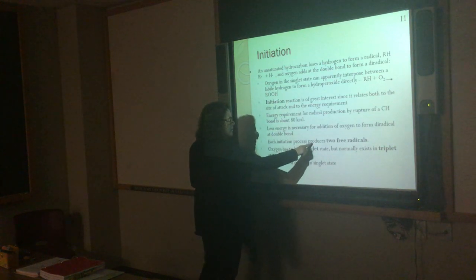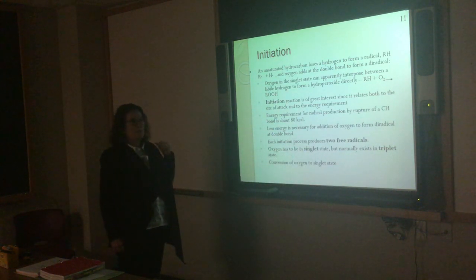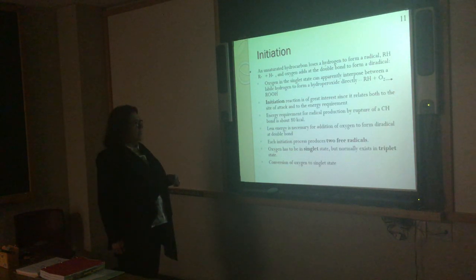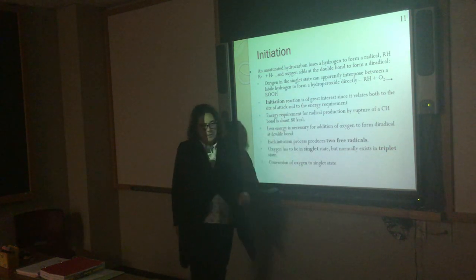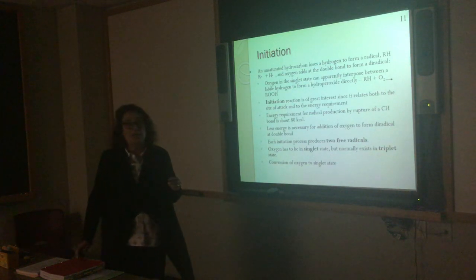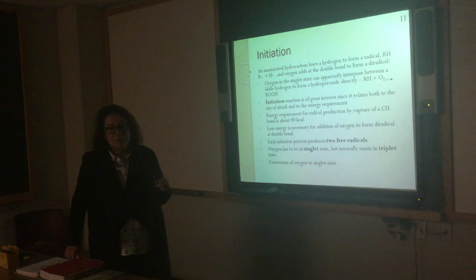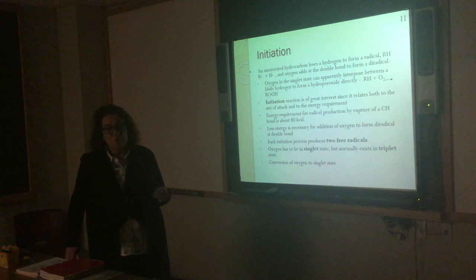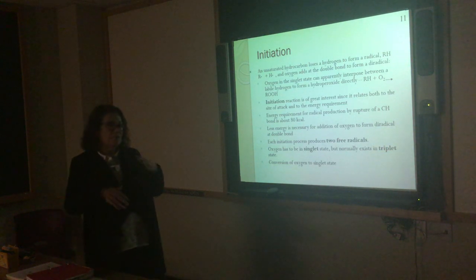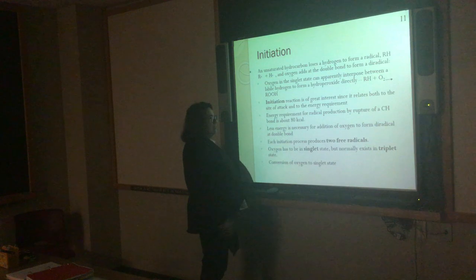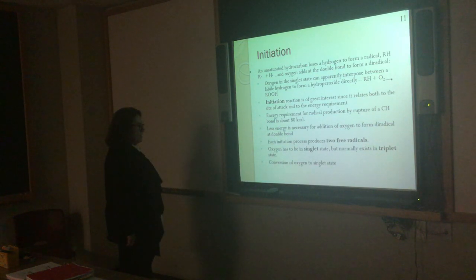Oxygen has to be in the singlet state. Each initiation process produces two free radicals — so once we start it, we've really let the cat out of the bag. The energy required for radical production by rupture of a C–H bond is about 80 kilocalories, so there has to be energy from some source. Heat and cooking provides great energy; light can also provide energy; temperature fluctuations provide energy. Obviously cooking provides the highest amount of energy to really start this reaction. Then it takes less energy for addition of oxygen to form diradicals at the double bond.